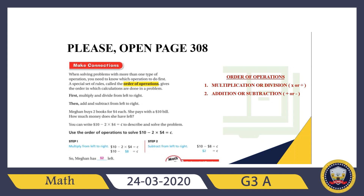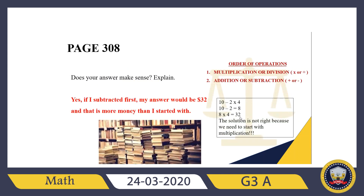For 10 minus 2 times 4, I multiply first: 2 times 4 equals 8. So the expression becomes 10 minus 8. Then I subtract: 10 minus 8 equals 2. Megan has two dollars left.